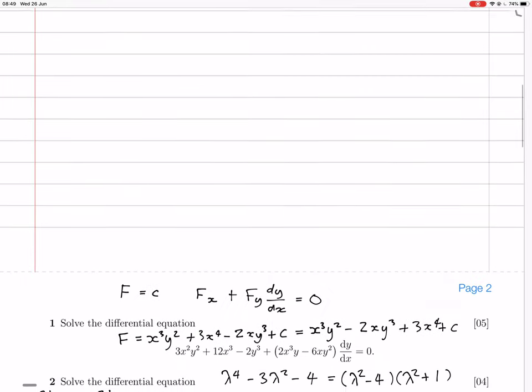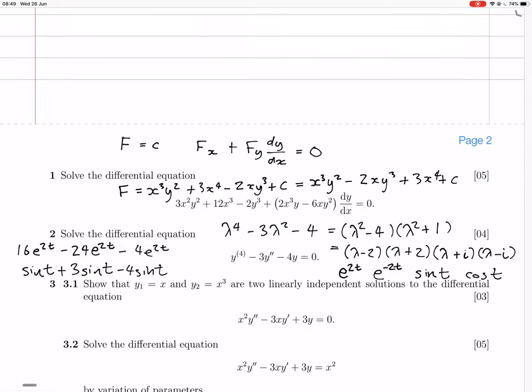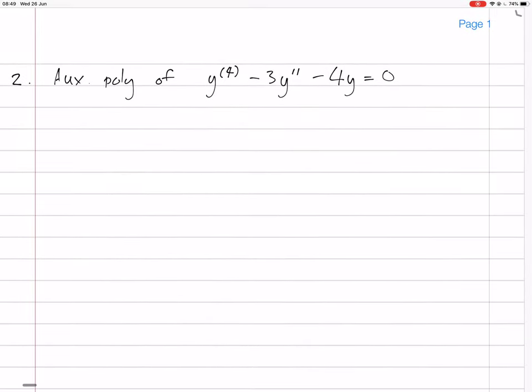Okay. So the auxiliary polynomial of this equation... The differential equation is y^(4) minus 3 times y'', plus 4 times y equals zero. That's what it is, right? Oh, it's minus 4. So the auxiliary polynomial of this is...